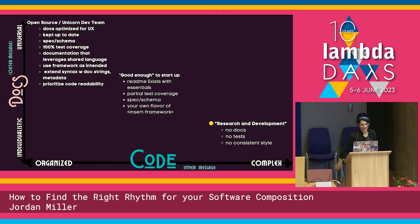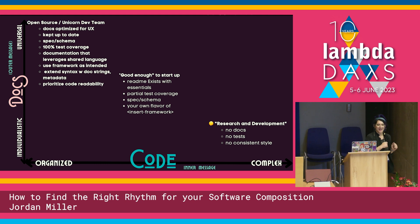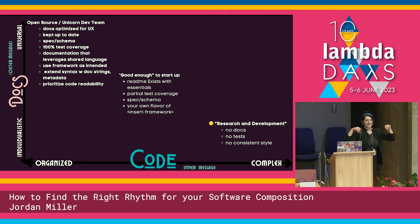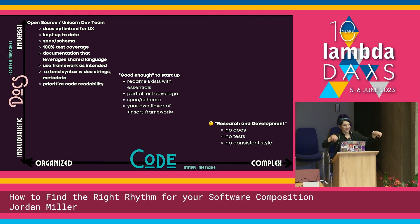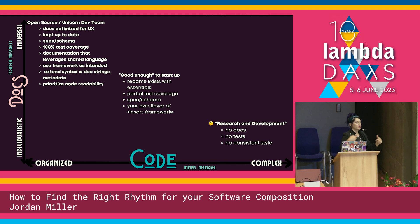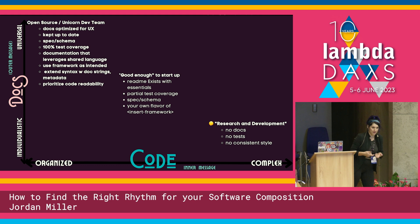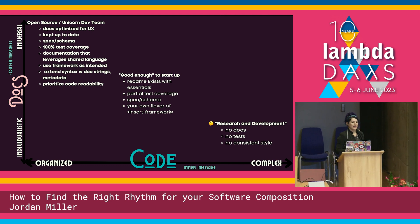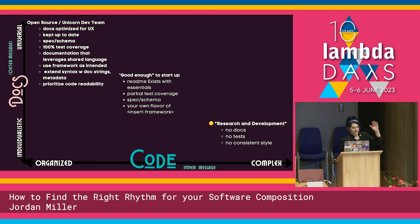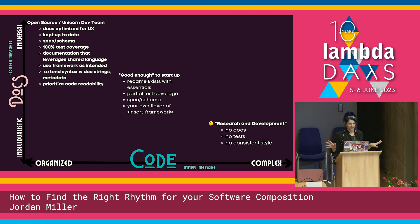Then we have research and development — moving fast, breaking things. And remember, this code is not good nor bad. Sometimes R&D requires you to be fast. If you're doing rapid prototyping, maybe you shouldn't stop to write the documentation if you need to be rapid about it — maybe it won't get adopted. So there we have individualistic docs, very complex code, no docs, no tests, no style. It's just wild.